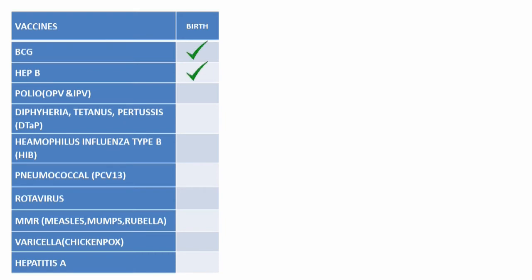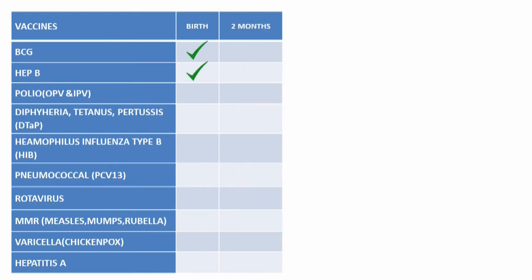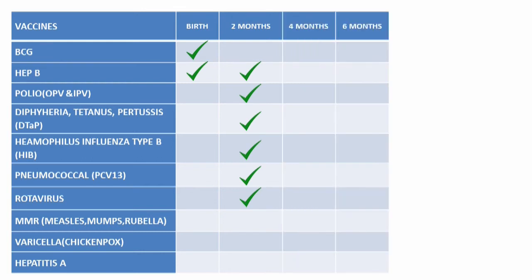At birth, BCG and hepatitis B vaccines are given. At two months, six vaccines are given: first, hepatitis B (second dose); second, polio; third, DTAP; fourth, HIB; fifth, pneumococcal vaccine; and sixth, rotavirus vaccine.